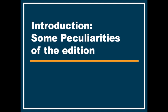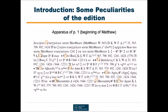First I want to show you some peculiarities of the edition. In order to provide as much information as possible within the given limits of a hand edition, the information is presented in a concise and somewhat idiosyncratic way. I especially refer to the use of certain signs that introduce each apparatus entry. You can see some of them here in the apparatus of the first page of the edition. For each sign in the apparatus, a corresponding sign can be found in the text.